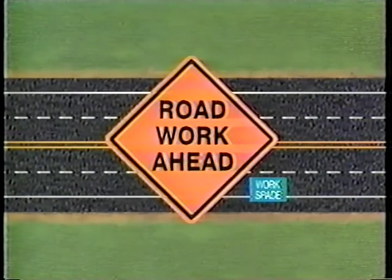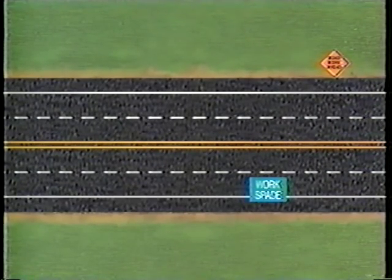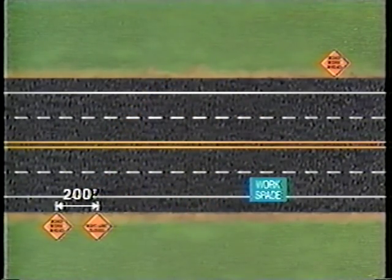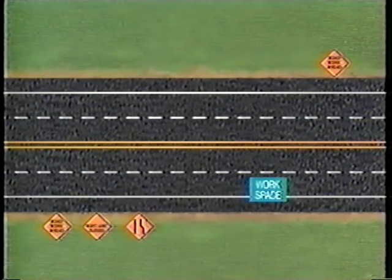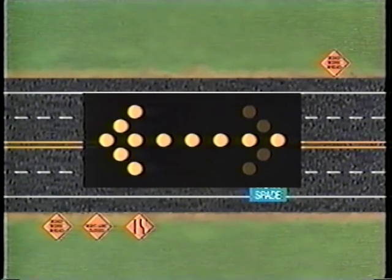The first sign installed for the unobstructed roadway is a road work ahead sign placed 200 feet in advance of the work space. The signs for the roadway on which work is taking place are then installed: road work ahead 970 feet before the workspace, then a right lane closed sign 200 feet from that, then a lane reduction transition sign 200 feet further. Once all advance warning signs are in place, it is recommended that you install an advanced warning flashing arrow display to give workers added protection while setting up the taper.